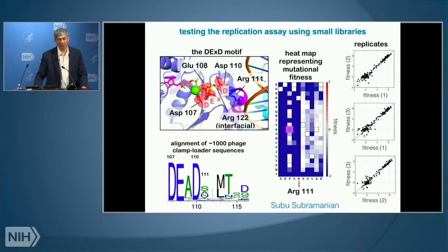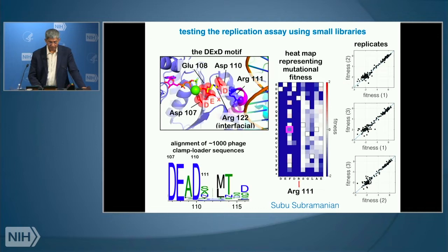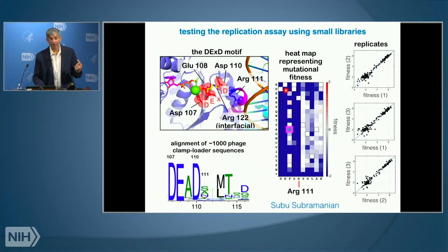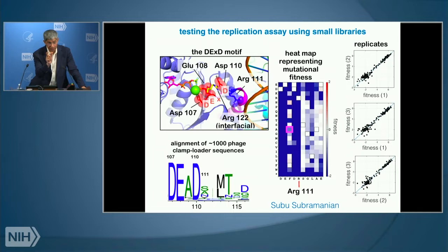When we look at this, things start to make chemical sense. The D and E — the first two residues — cannot be substituted even by another acidic residue without total loss of function, as measured by phage production. This makes sense: if you're coordinating magnesium and activating a water molecule, if you shift the position of the carboxyl group by even a fraction of an angstrom, you lose activity. The deep mutagenesis experiment reflects that chemical truth. The fourth position, aspartate, is slightly more tolerant — it can be replaced by glutamate in the T4 system, since it's not a catalytic residue but is involved in interfacial stabilization.